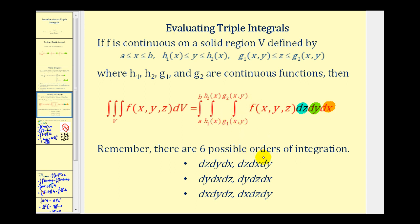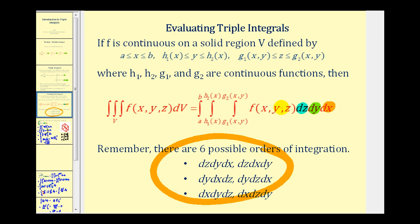Of course, all limits could be constants, but if expressed as functions, they must follow this structure. If the order of integration changes — and there are six possible orders — this affects how the functions are expressed in terms of x, y, and z. Let's take a look at our first example.